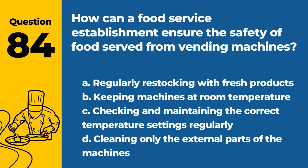Question 84. How can a food service establishment ensure the safety of food served from vending machines? a. Regularly restocking with fresh products. b. Keeping machines at room temperature. c. Checking and maintaining the correct temperature settings regularly. d. Cleaning only the external parts of the machines. Answer: c. Checking and maintaining the correct temperature settings regularly. This is important for keeping food in vending machines safe.